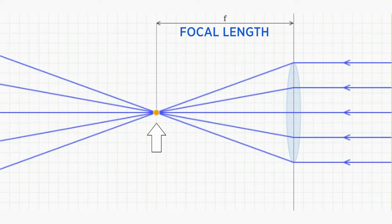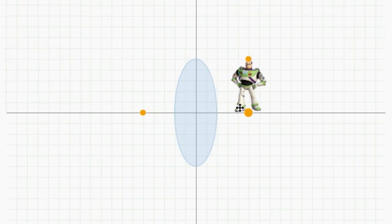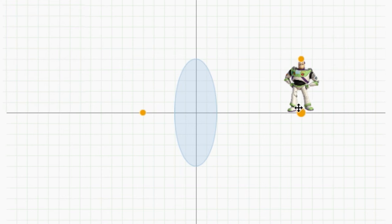We saw this relationship in lesson one, but now let's think about nearby objects. Where do they focus? That is, where would you have to put the image plane to make this object sharp?